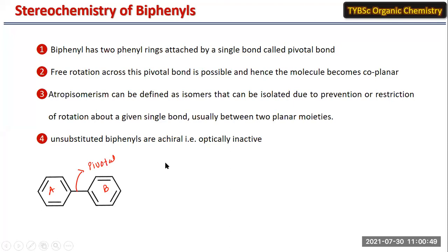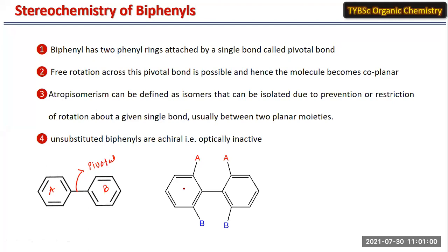The rotation can be restricted when the molecule is substituted. In the first ring there are two substituents, A and B, and in the second ring there are another two substituents. Due to these substituents, rotation around the pivotal bond is restricted. These two rings are not coplanar — they are not in the same plane due to the presence of bulky groups at the ortho position of each ring.